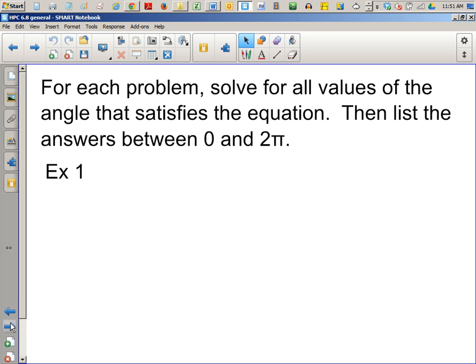So, for each problem, solve for all values of the angle that satisfies the equation, then list the answers between 0 and 2π. I will work in radians. Just because, but if you need degrees, you can raise your hand. So for my first example, the one I picked was this one, and these are all problems from the Sullivan book, I believe.